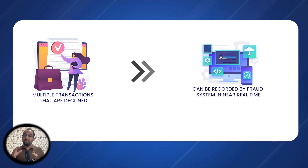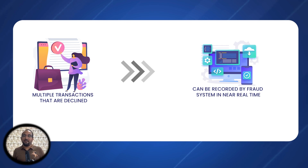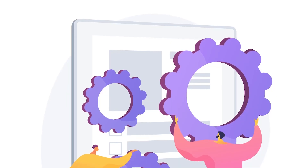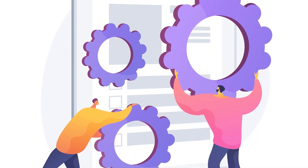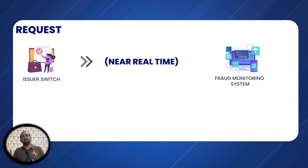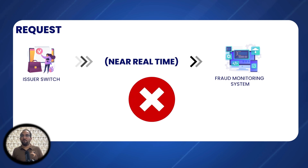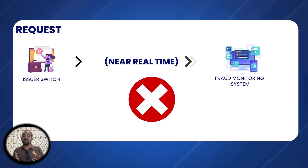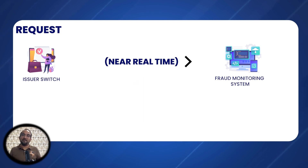Therefore, it is important for any fraud engine to record all these behaviors. If any subsequent transaction aligns with a fraudulent pattern that the authorization engine could not catch, those transactions should be declined by the fraud engine in real time. The conclusion is: configuring fraud assessment in near real-time for transactions already declined by the authorization engine is a sound practice. If you don't do this, the pattern or sequence of multiple incorrect PINs or suspicious transactions cannot be recorded by the fraud engine.